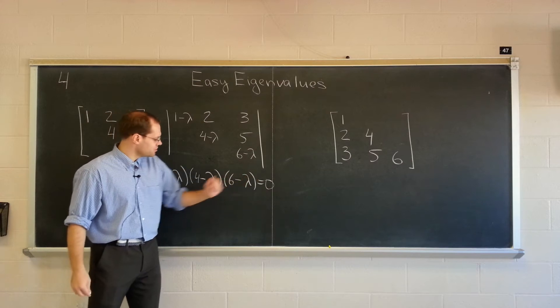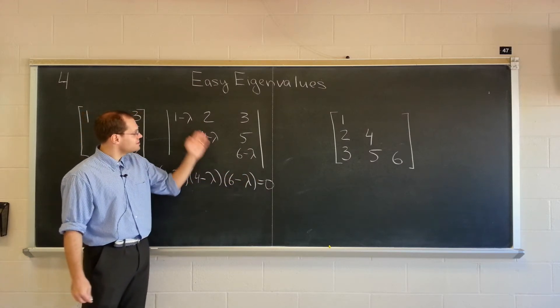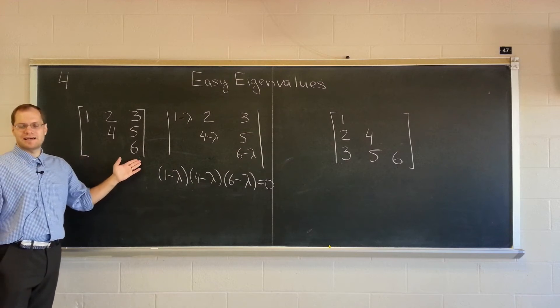And equating it to zero produces roots one, four, and six. It's exactly the values that we had on the diagonal.